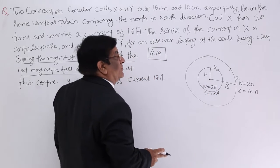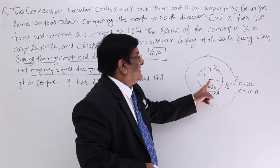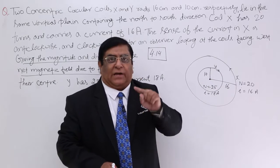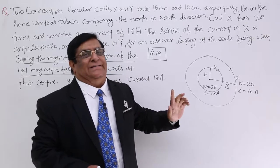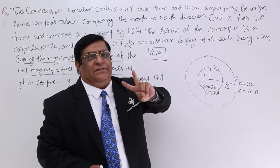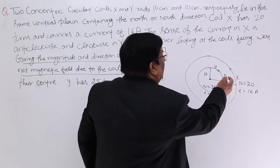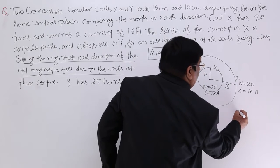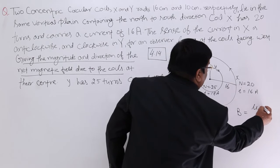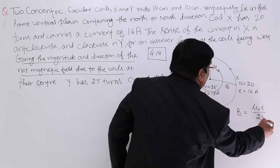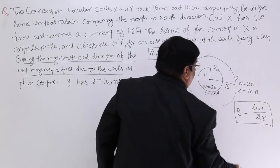Now the magnetic field is due to current, and at the centre of a coil we use the formula: magnetic field at the centre equals μ₀I upon 2r. If there are n turns, this becomes μ₀nI upon 2r. This formula should come to your mind readily.